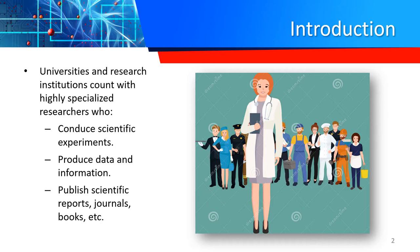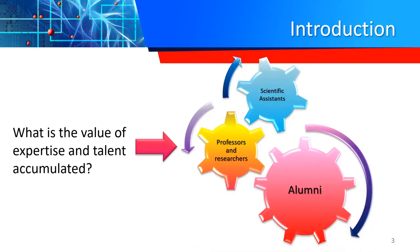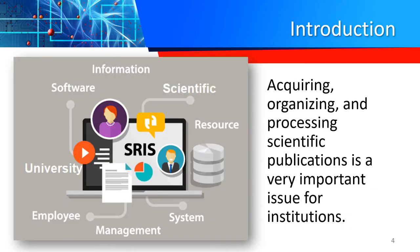Universities and research centers normally come with highly specialized researchers who produce scientific experiments, produce data, information, statistics, and publish their scientific results in reports, journals, books, among others. But what is the value of expertise and talent accumulated by scientific assistants, professors, researchers, and students? This is a very important issue for every institution. Therefore, the acquisition, organization, and processing of scientific publications is very important.